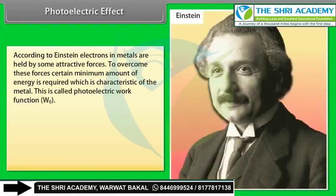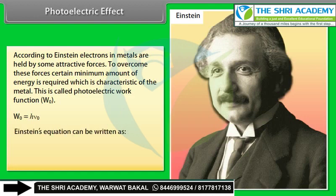According to Einstein, electrons in metals are held by attractive forces requiring a minimum energy to overcome, called the photoelectric work function W₀, where W₀ = hν₀. The Einstein equation can be written as: hν = hν₀ + KE, therefore KE = hν − hν₀.